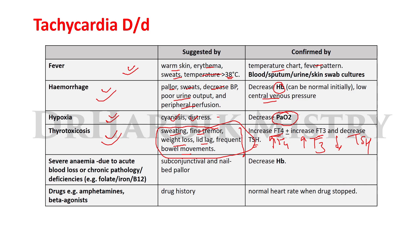When tachycardia occurs along with subconjunctival and nail bed pallor, and there is a decrease in hemoglobin level, then we can say the tachycardia is due to severe anemia — either from acute blood loss or chronic pathology such as folate, iron, or vitamin B12 deficiency.